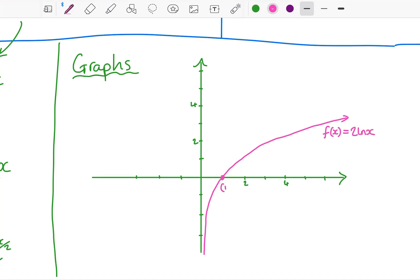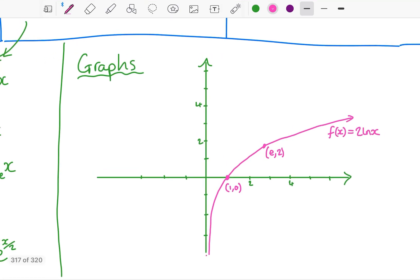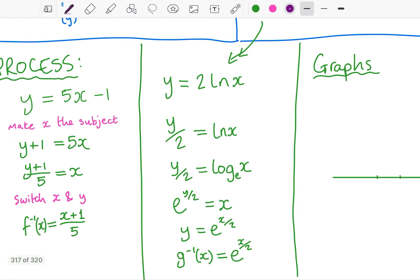I have an x intercept there, a root. I could also say that I have e comma two. And I could also say that I have a vertical asymptote at x equals zero. We'll approach that, we'll never reach it.